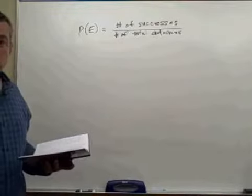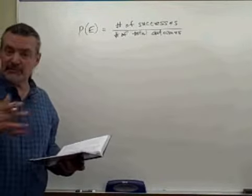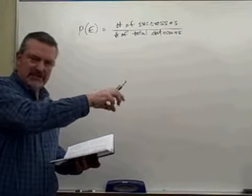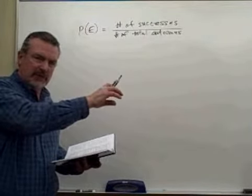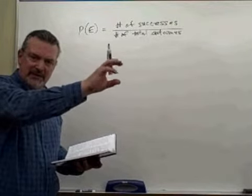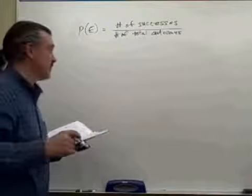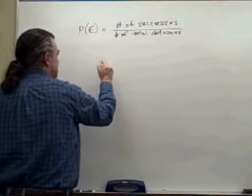Two dice are rolled. Well, when you roll two dice, there are 36 possible outcomes. That first die, you have six outcomes, and for every one of those outcomes, you have six outcomes on the second die. So you have a total of six times six, you have a total of 36 outcomes.